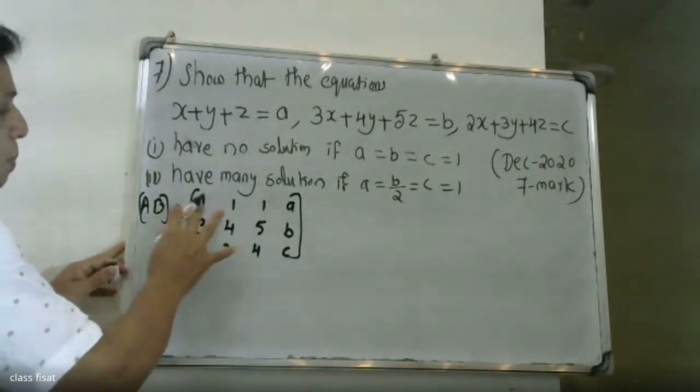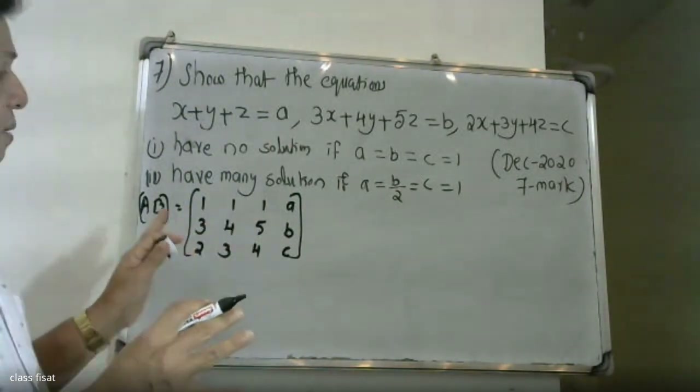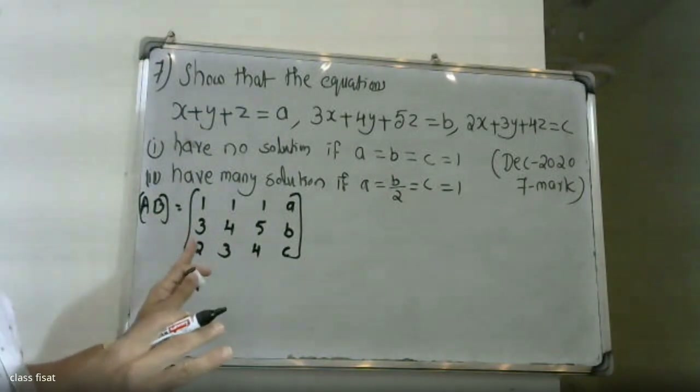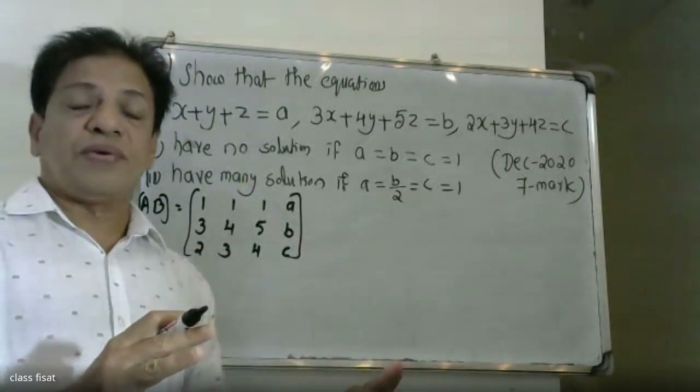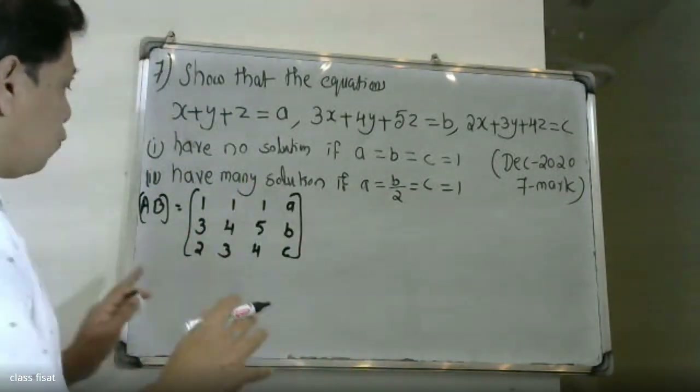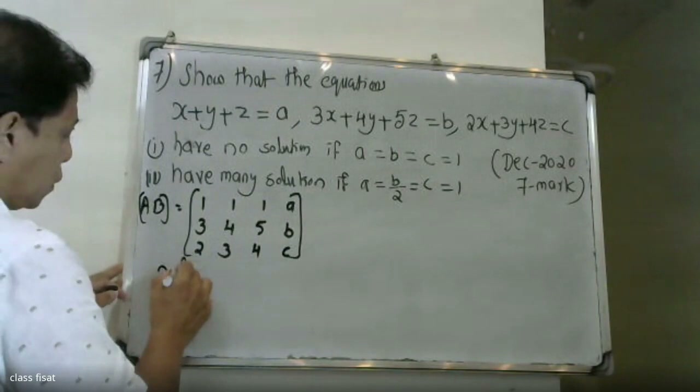Then, the augmented matrix. Our augmented matrix in echelon form — we are going to reduce it to echelon form.